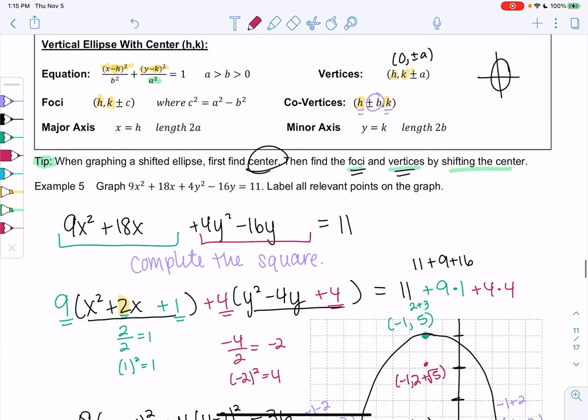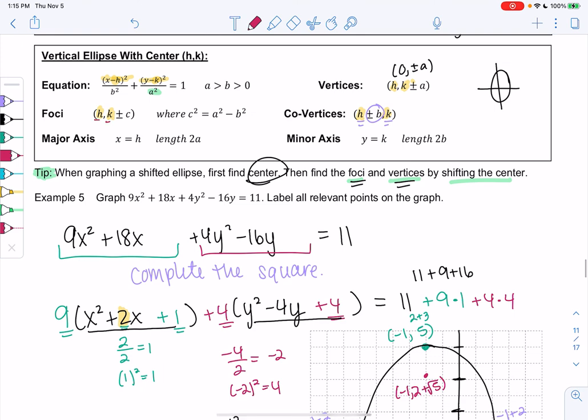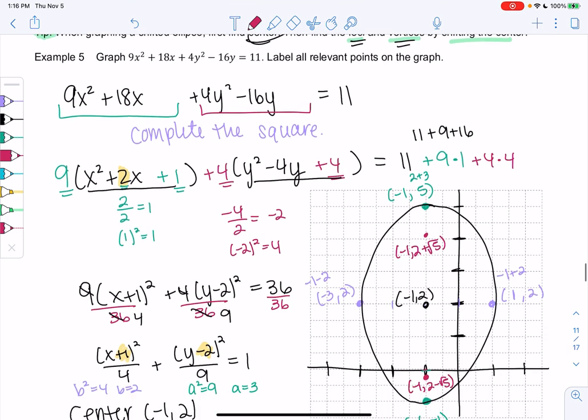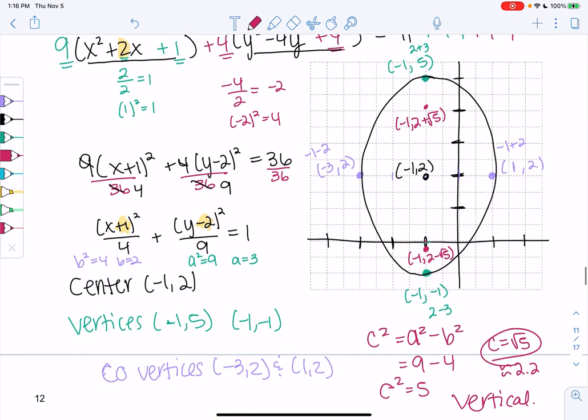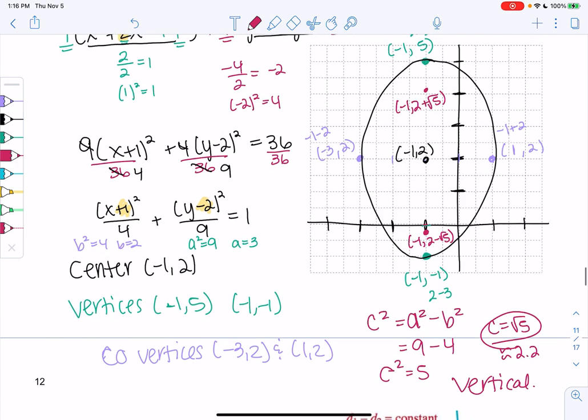And again, we're using the formula. We're taking the center, hk, and then we're adding and subtracting root 5. But I think visual is a little bit easier to me. But you can plug into the formula as well. So those are my foci. I'll just write those down in my list of important points. And we'll be done with the graph.